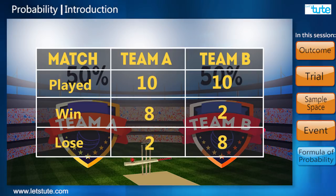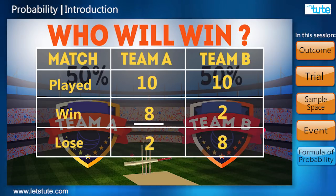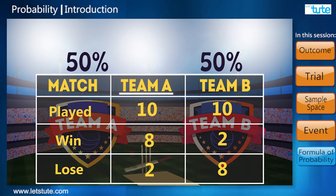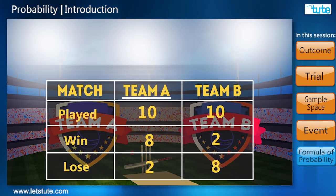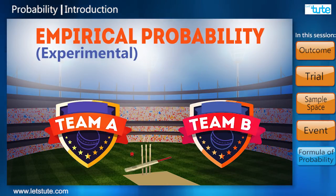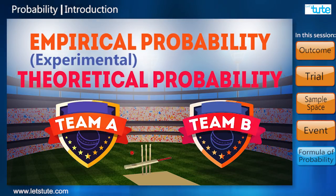Suppose in the past they've played 10 matches, of which team A has won eight of them. Then on being asked to predict the winners, we would say team A. This prediction or calculation of probability based on some data is called empirical probability. Now I hope there is no confusion about empirical and theoretical probability.